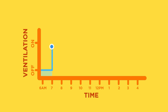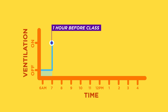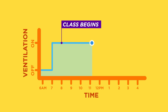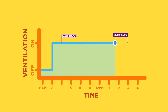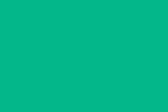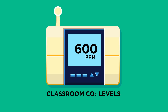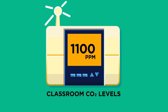The fan supplying the ventilation to the classroom must run at least one hour before scheduled occupancy and during all occupied hours. In addition to testing and adjusting ventilation rates periodically, continuous monitoring of classroom CO2 levels is recommended to quickly detect ventilation problems.